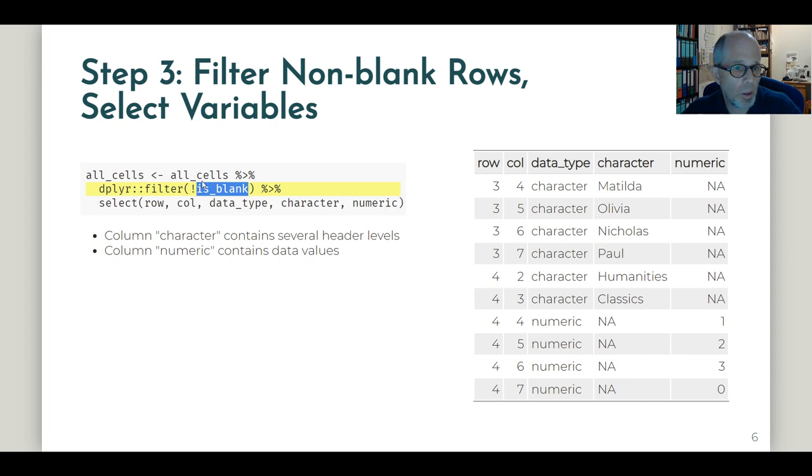We can just filter the non-blank rows and then select a couple of rows. So the data looks like we see on the right now. The key is the character column that contains all the header levels.